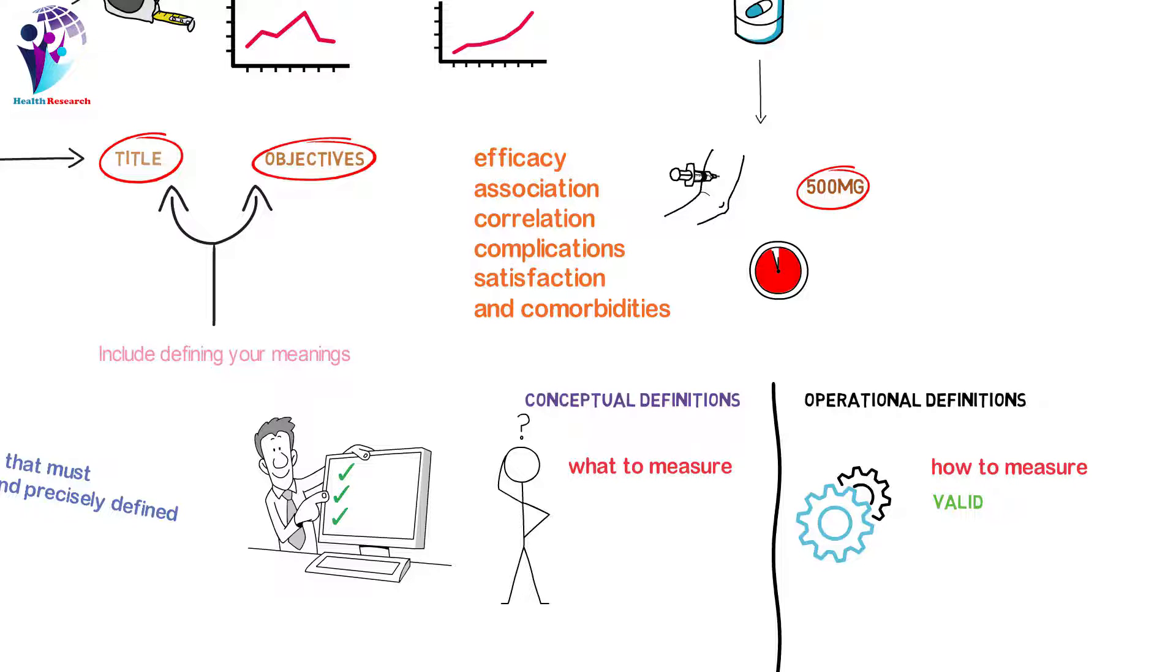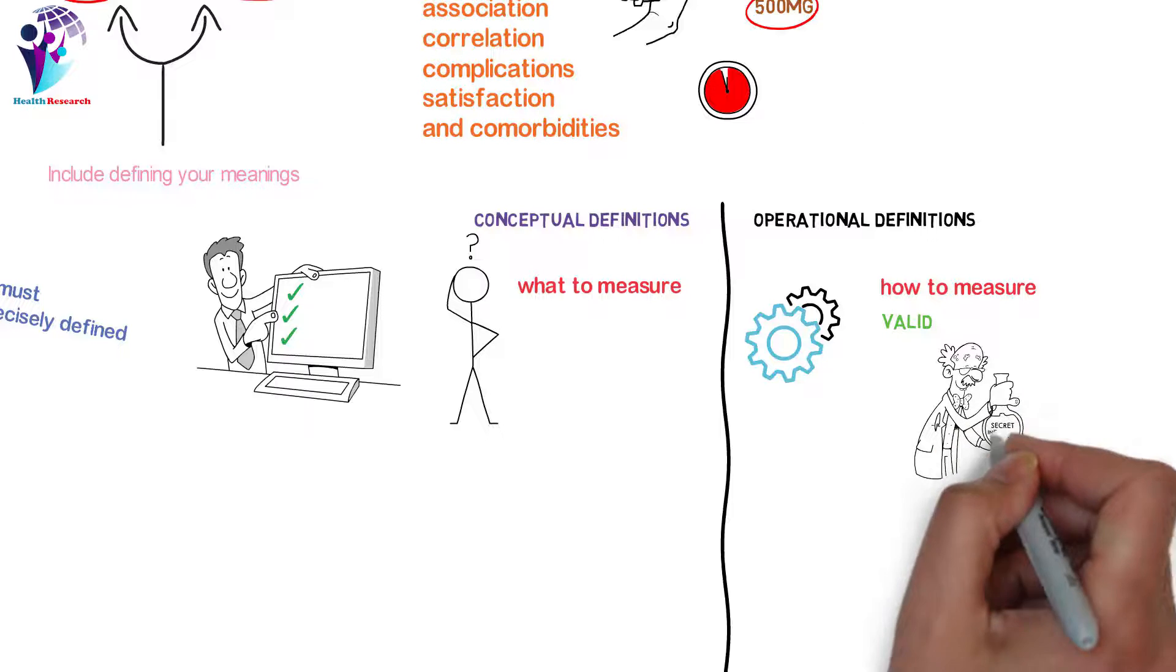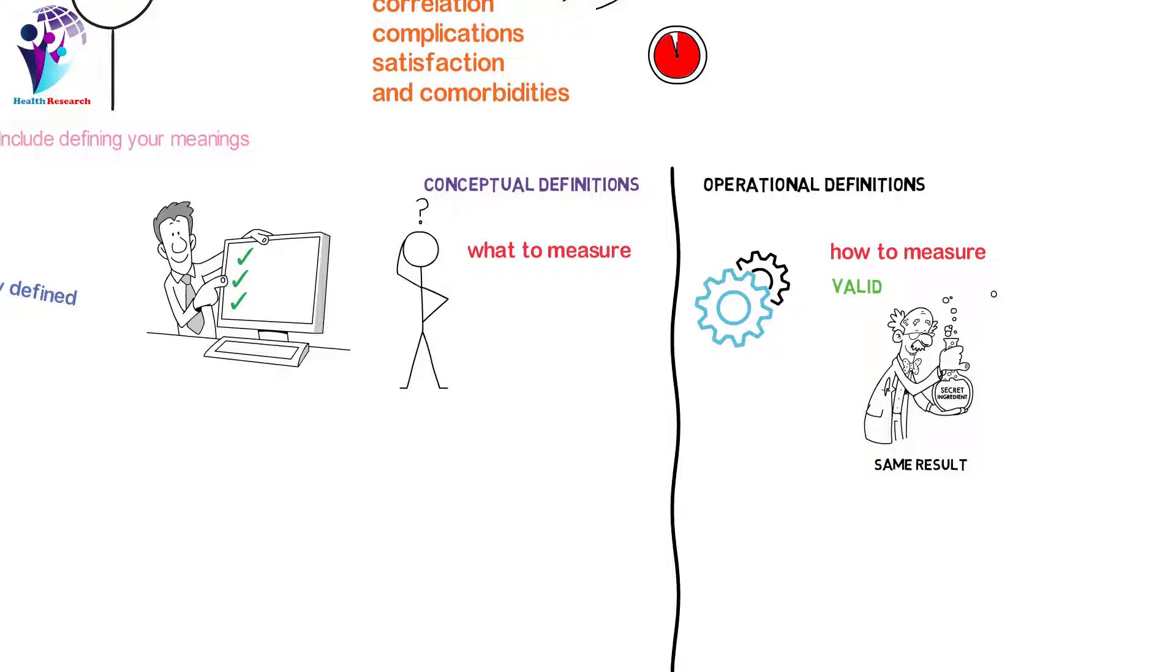An operational definition must be valid, which implies that it should measure what it is supposed to measure. It must also be reliable, meaning that the results should be the same even when done by different people or by one person at different times.